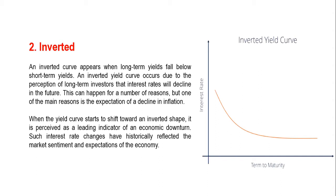When investors expect longer maturity bond yields to become even lower in the future, many will purchase longer maturity bonds to lock in yields before they decrease further. This increasing demand for longer maturity bonds and lack of demand for shorter maturity bonds leads to higher prices but lower yields on longer maturity bonds, and lower prices but higher yields on shorter maturity bonds, further inverting the downward-sloped yield curve.